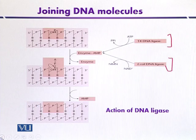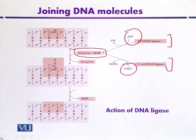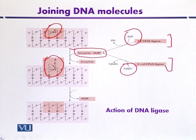Their cofactor requirements are different: ATP for T4 DNA ligase and NAD+ for DNA ligase from E. coli. Both are hydrolyzed and an enzyme-AMP complex is formed. The target site is the 5' phosphate and 3' OH group that needs to be ligated so that a phosphodiester bond will be formed. The enzyme binds and introduces the phosphodiester bond within the DNA molecule.